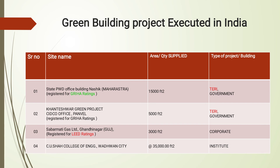The third project is Sabarmati Gas Limited, Gandhinagar, registered for LEED ratings. LEED stands for Leadership in Energy and Environmental Design — the most widely used green building rating system in the world, available for virtually all building types, providing a framework for healthy, highly efficient, and cost-saving green buildings. The area was 3,000 square feet and it was a corporate project. The fourth is CU Shaha College of Engineering, Vadavan city, with an area of 35,000 square feet — an institutional building.